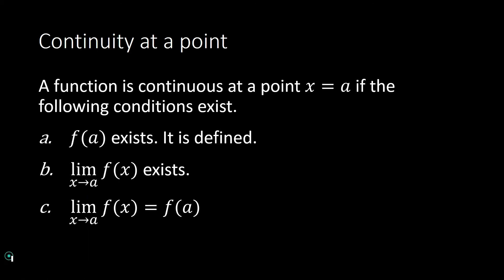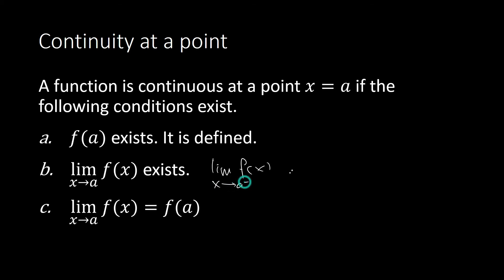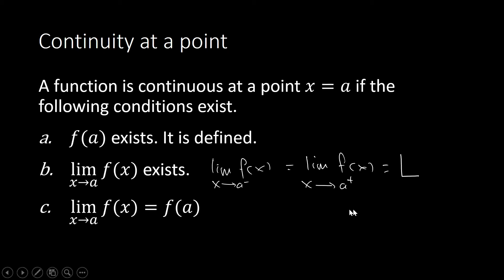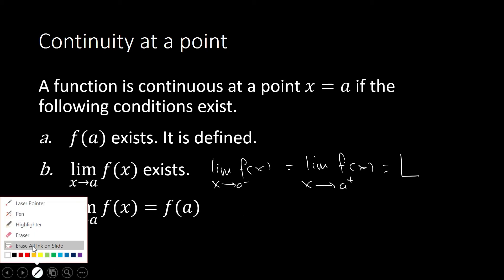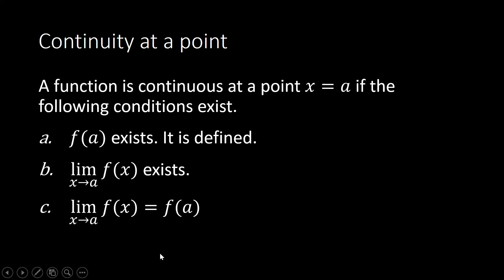When can we say that the limit of a function exists as x approaches a? You have your one-sided limits: the limit of your function as x approaches a from the left must be equal to the limit as x approaches a from the right, and both must equal the same real number L. That is how you show that the limit of a function exists. These three conditions establish that the function is continuous at a particular point.